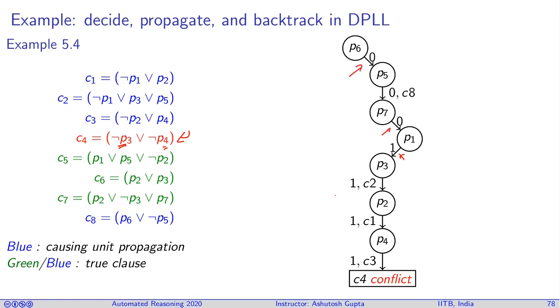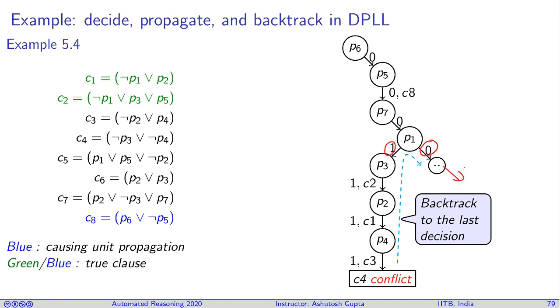One, two, and three. What do we need to do? We need to backtrack. Our algorithm will backtrack and flip the last decision. It just makes the p1 from one to zero and moves on the algorithm. So how does the algorithm proceed? It makes few decisions, pushes, does the unit propagation, and at some point of time it sees a conflict and then backtracks. That is the essence of DPLL.